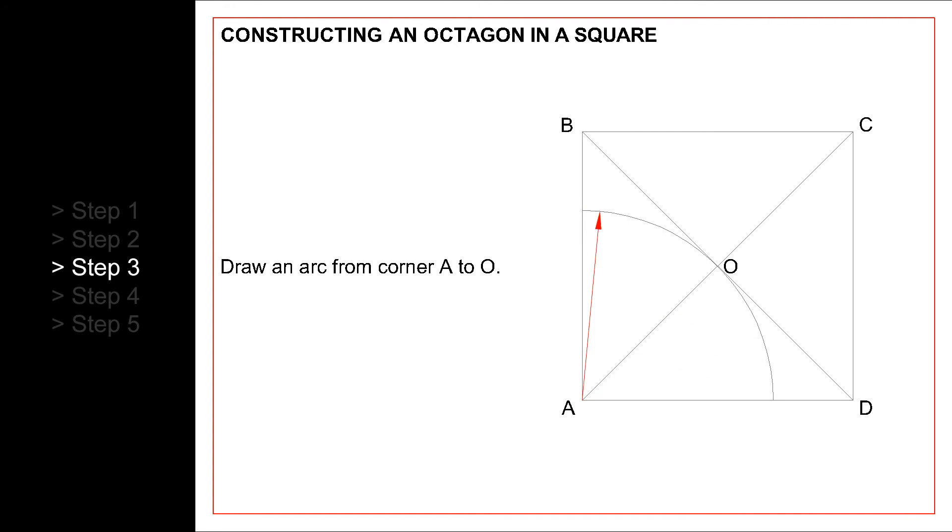Using your compass, draw an arc as shown, having corner A as center and length OA as radius.